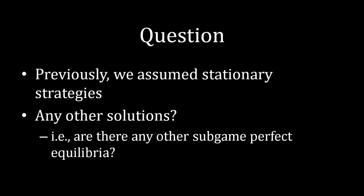What's our goal here? Previously we assumed that the players were going to play stationary strategies — the exact same thing in every odd period, and something identical in each even period. We assumed this because it was easy to solve, but it left open the question of whether there are any other solutions. What we want to know is if there are any other subgame perfect equilibria to Rubenstein bargaining that don't involve stationary strategies. The answer is that there aren't any other subgame perfect equilibria. The stationary strategies are the only solution to the game.